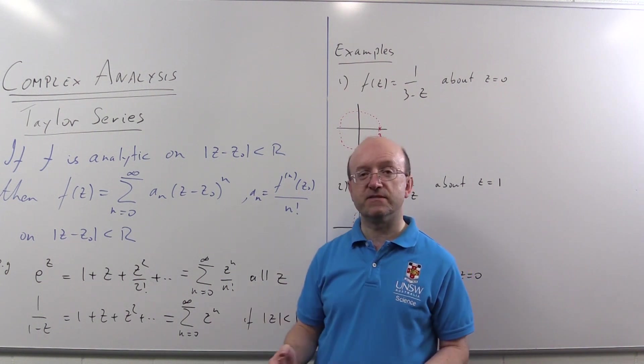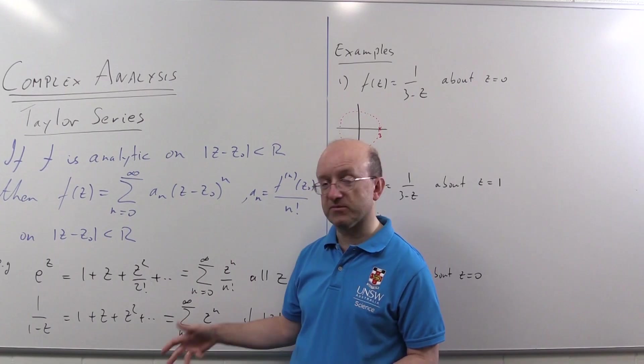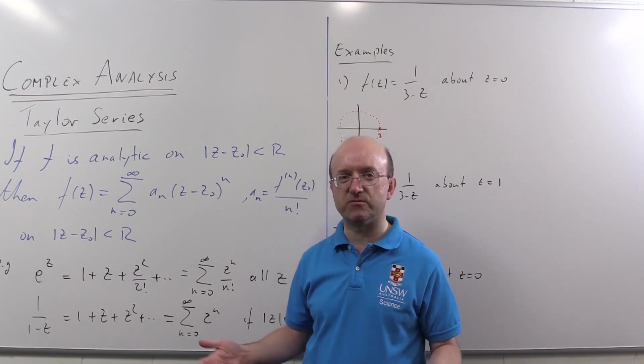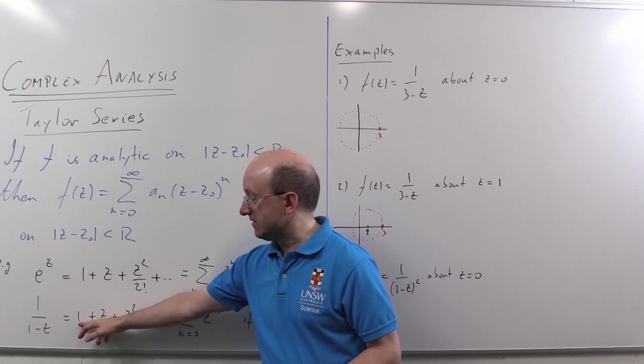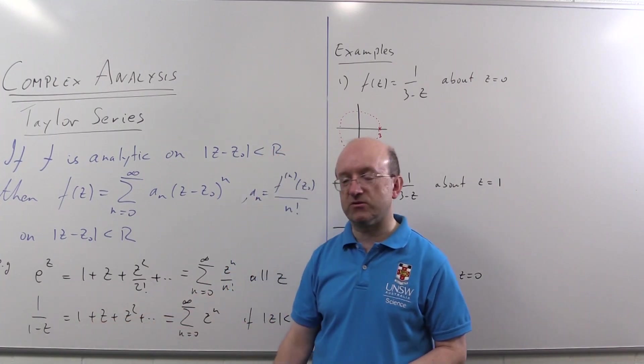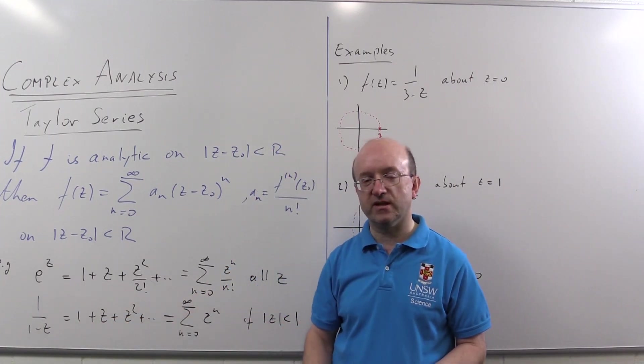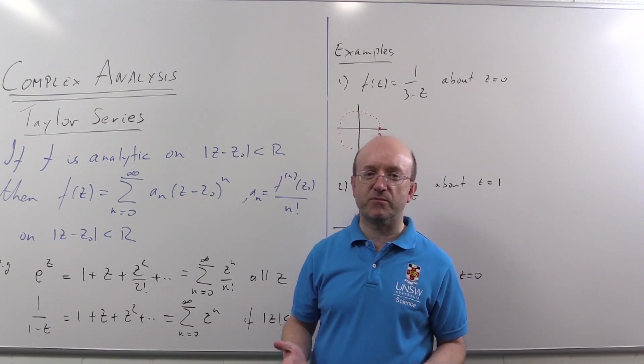If we anti-differentiate this power series, we're going to get something for the logarithm, minus log of one minus z. In fact, we'd get z plus z squared over two plus z cubed over three, et cetera, plus an arbitrary constant.